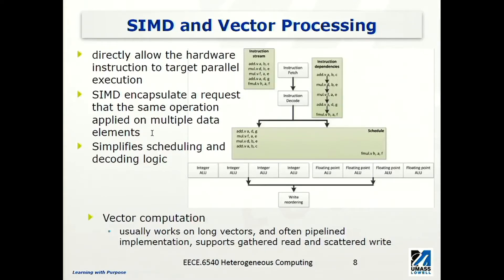With SIMD instructions, we only need to schedule one instruction, which will apply the same operation on every element within these vectors. Assuming A, D, G, F, E — they are all vectors. In this example, we are actually having this four-way SIMD, so that is to say that one instruction can apply to four pairs of operands.